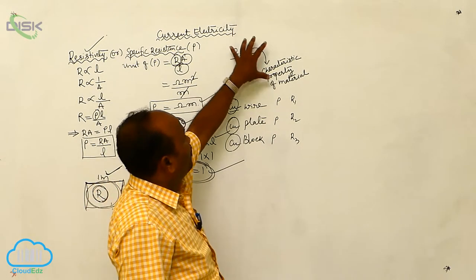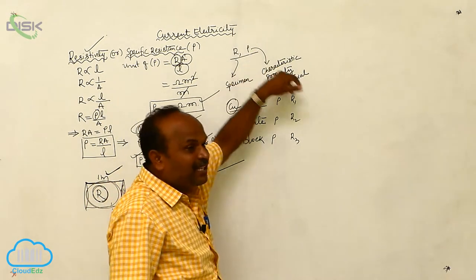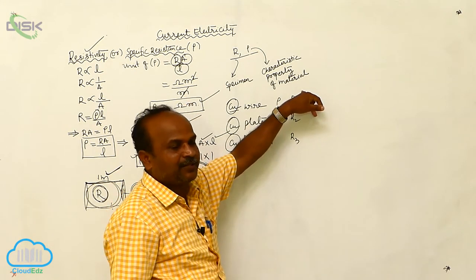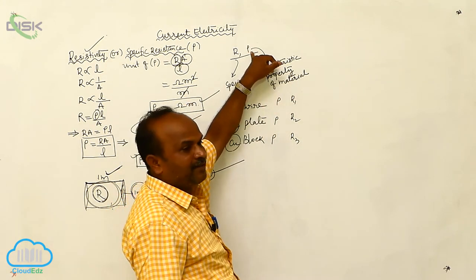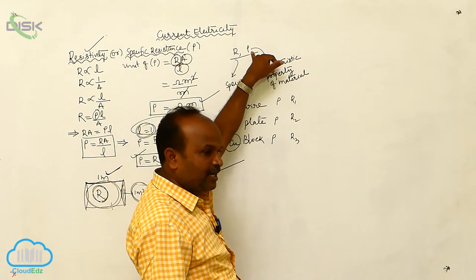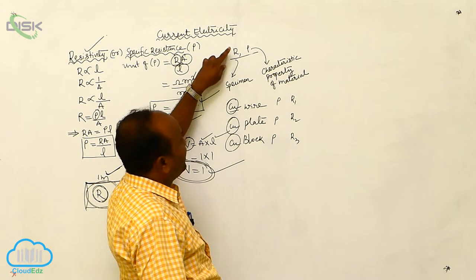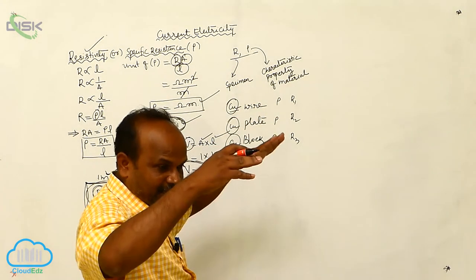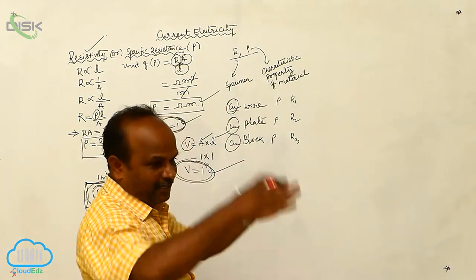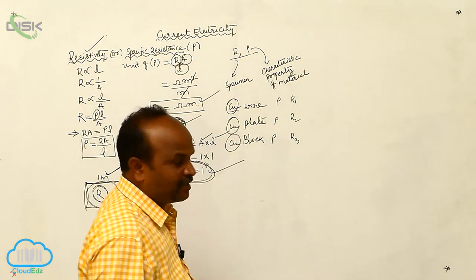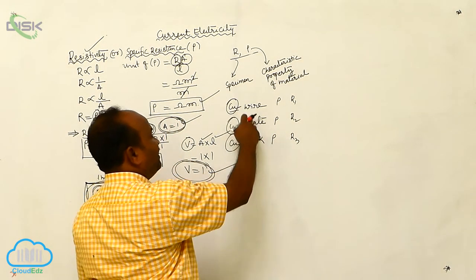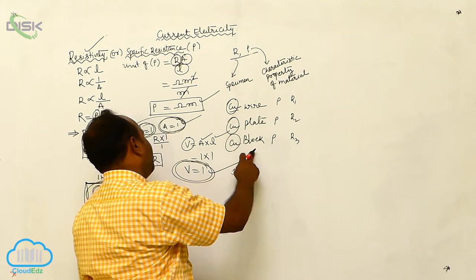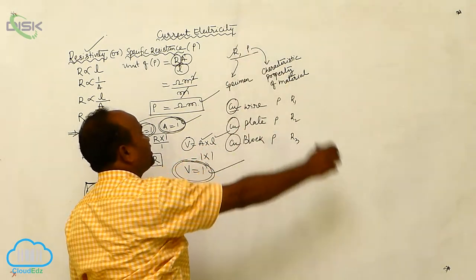Therefore, rho is related to the nature of the material. As long as the nature of the material does not change, resistivity is also not changed. Resistance depends upon length, resistance depends upon the cross-sectional area, resistance depends upon the geometrical arrangement. These are three different dimension objects, and as there are three different dimensions, resistance is different.